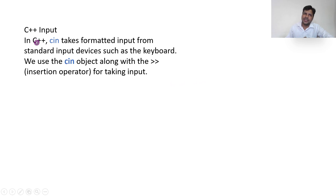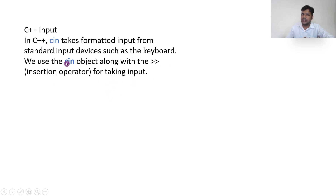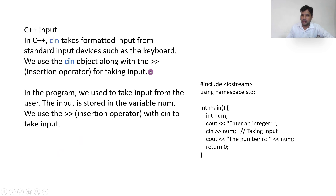Now let us move to the input operator — cin. In C++, cin takes formatted input from the standard input device, which is the keyboard. We use the cin object along with the insertion operator for taking input. If you want to give input from the keyboard, use cin with the insertion operator. In a program, input is stored in a variable num using cin with the insertion operator.